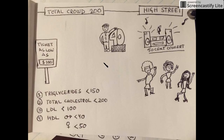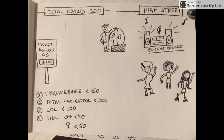Total triglycerides in the blood are not more than 150 mg/dL. To remember this, think of three girls dancing to 50 Cent songs: 50 plus 50 plus 50 equals 150. So triglycerides are not more than 150.